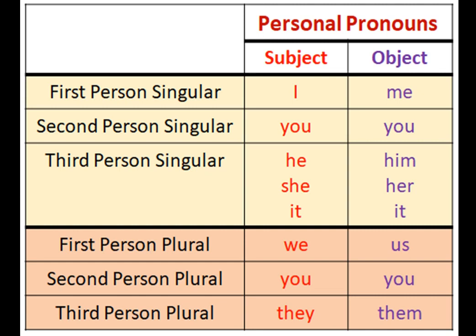For all persons, we will first look at the singular form. First person singular subject is 'I' and object is 'me'. Second person singular is 'you', and the possessive is 'yours'. Third person singular is 'he', 'she', or 'it'. Now in the plural form: first person plural subject is 'we' and object is 'us'. Second person plural is 'you' in both subject and object. Third person plural subject is 'they' and object is 'them'.